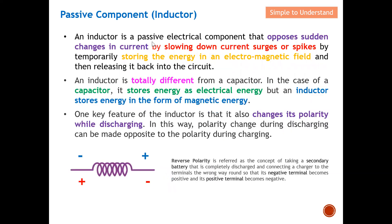An inductor is a passive electrical component that opposes sudden changes in current. It prevents current changes by slowing down current surges or spikes by temporarily storing the energy in an electromagnetic field and then releasing it back into the circuit. This is how it ensures a constant current — it either stores or releases energy into the circuit to maintain a constant current level.